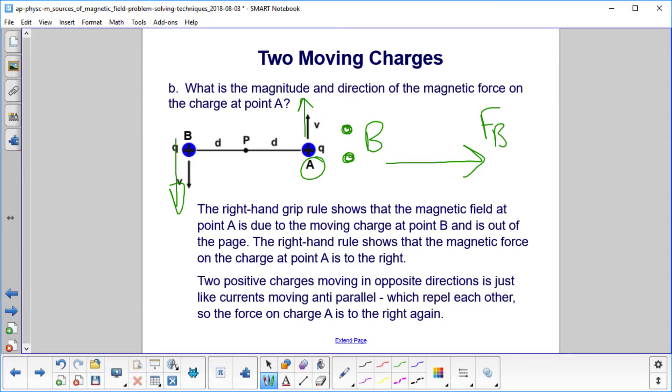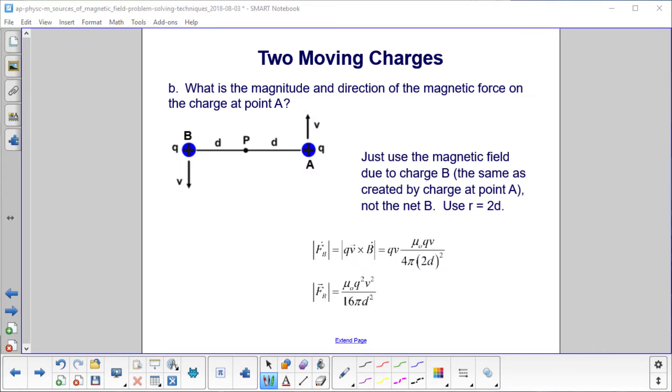Another way of doing it is two positive charges moving in opposite directions. It's just like two currents moving anti-parallel. And we know those repel each other. So you could also just use that argument, say the magnetic force on point A is to the right. They both work, of course.